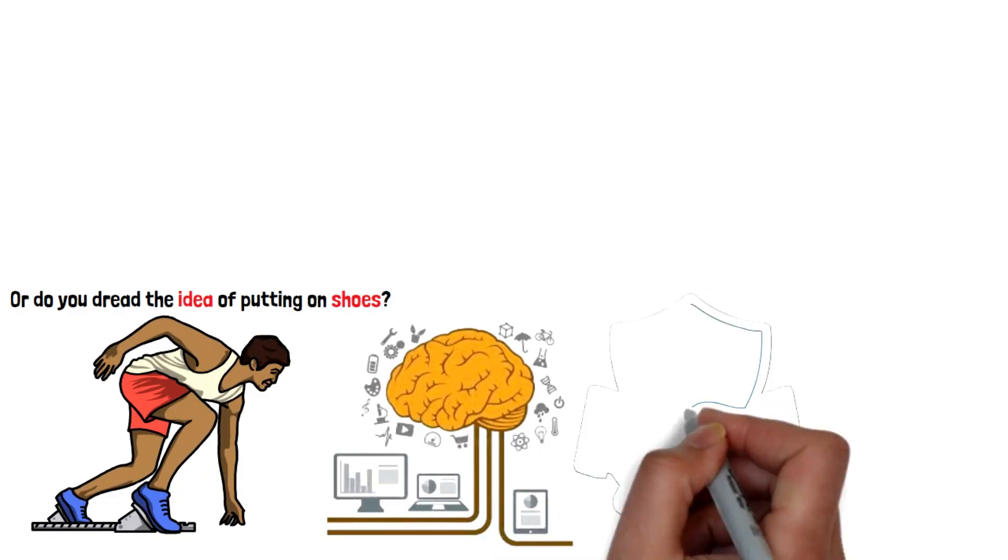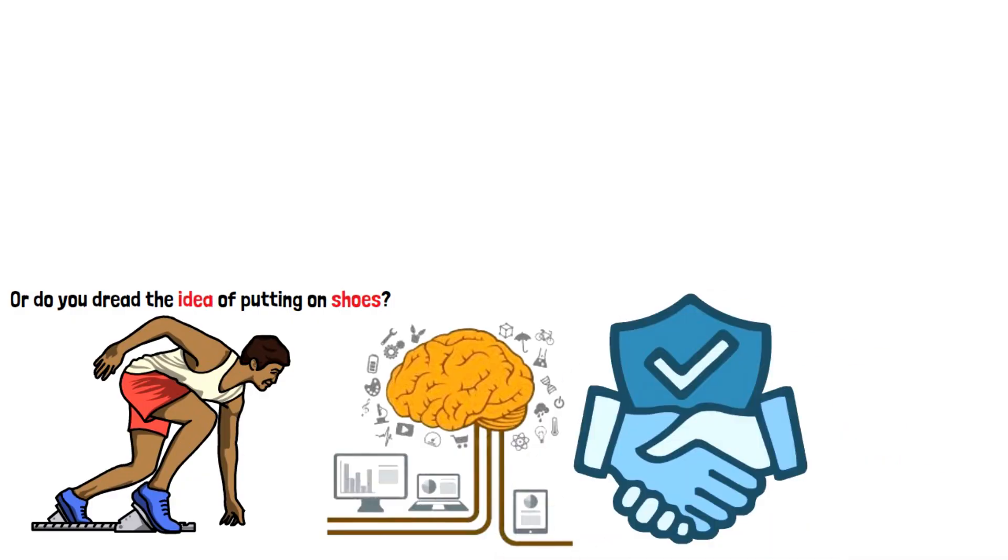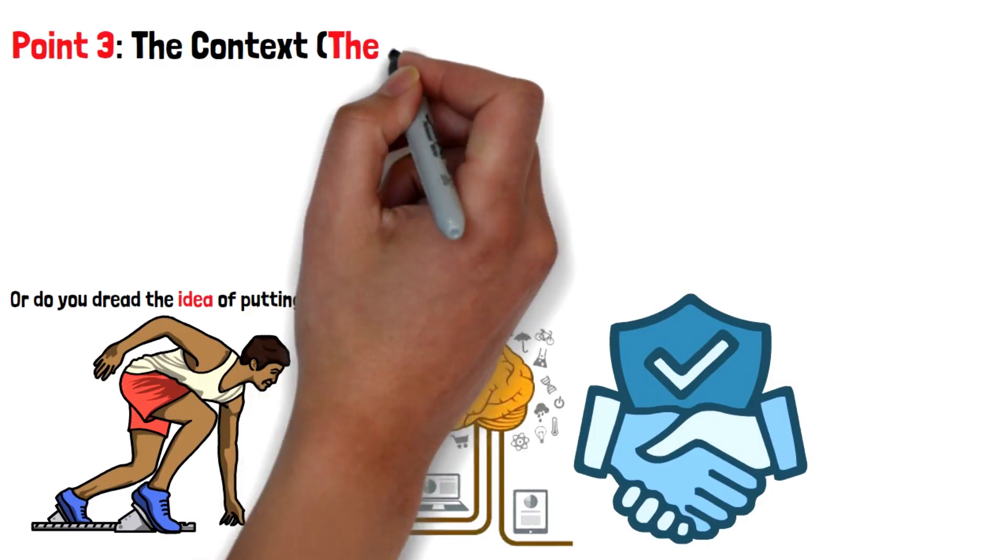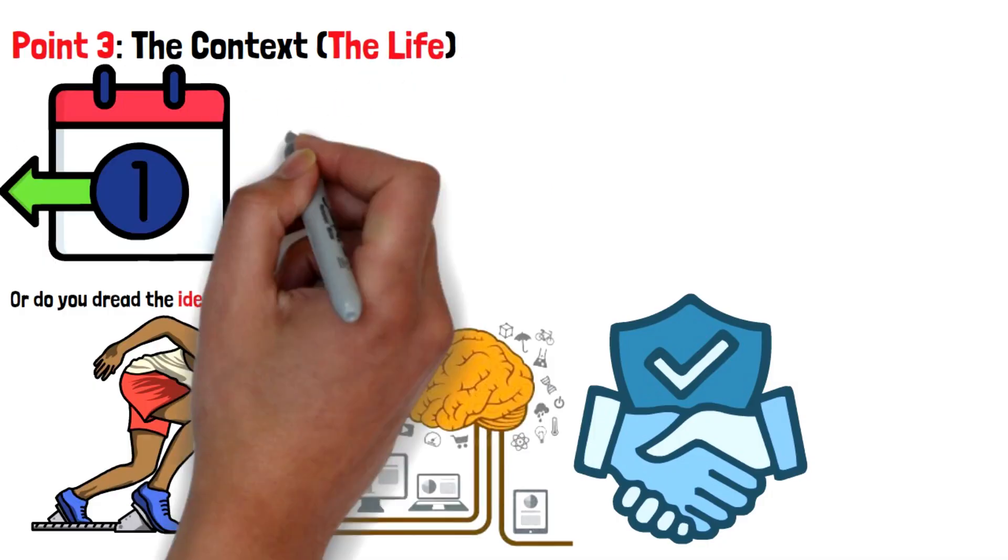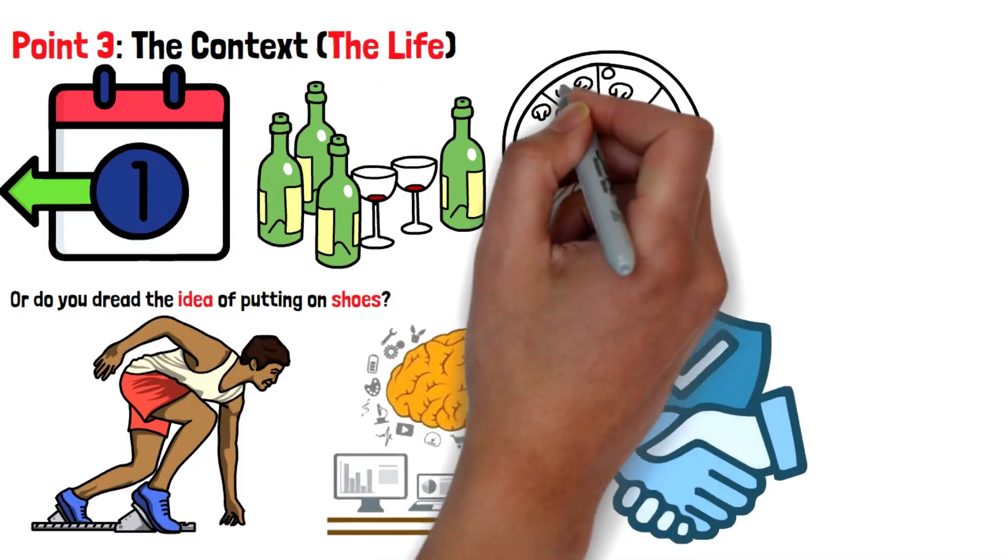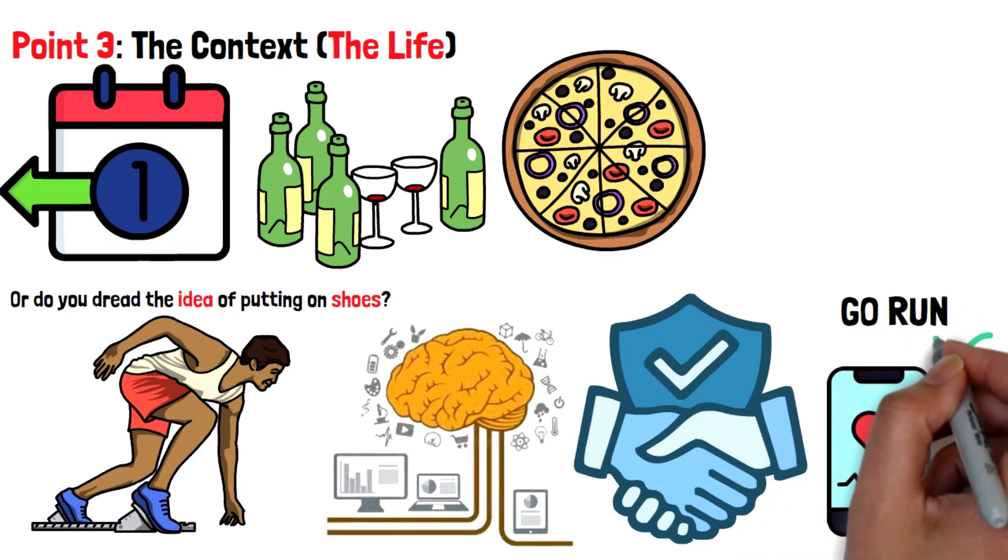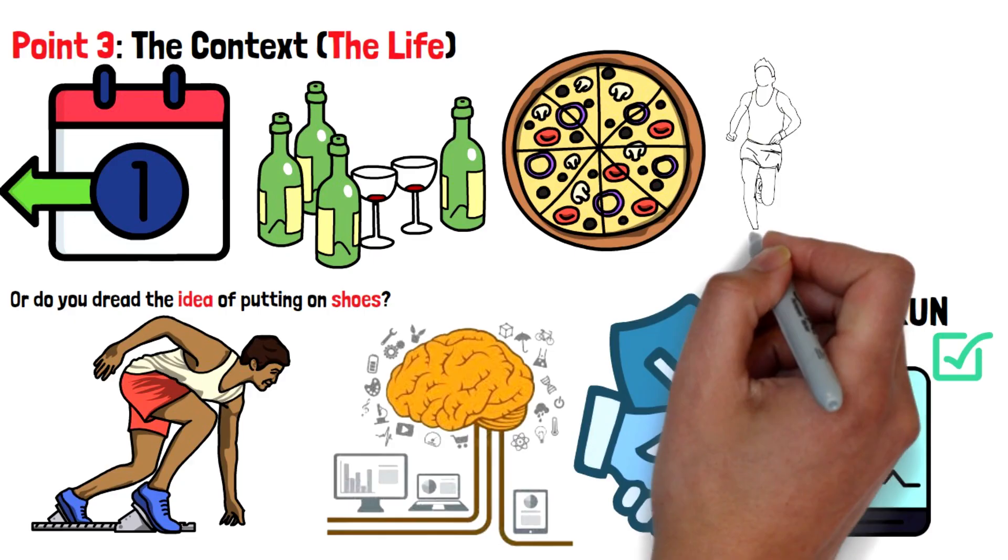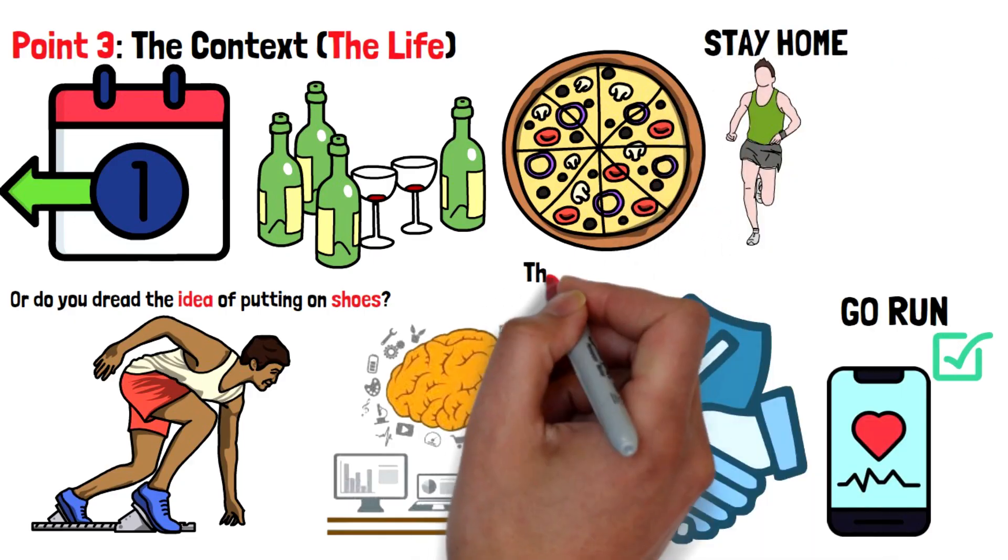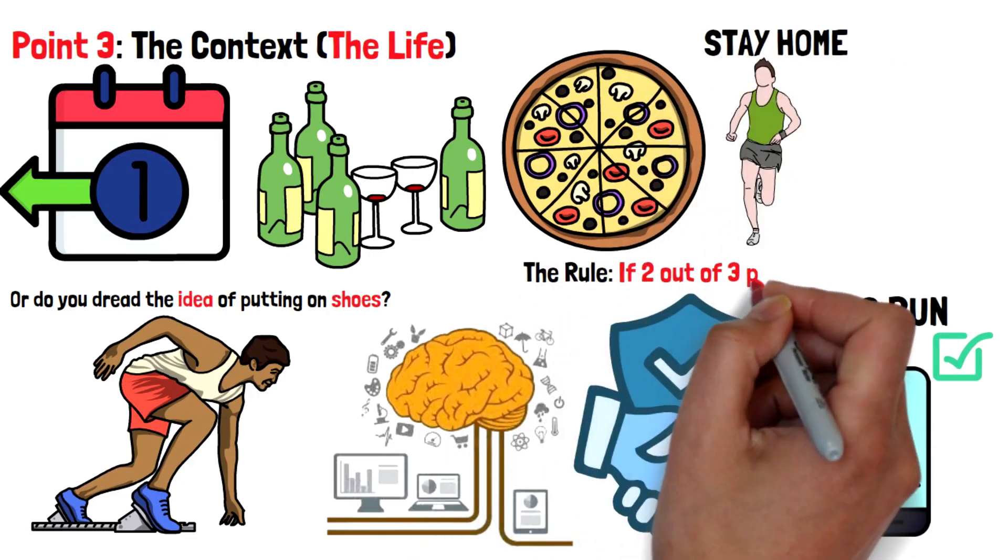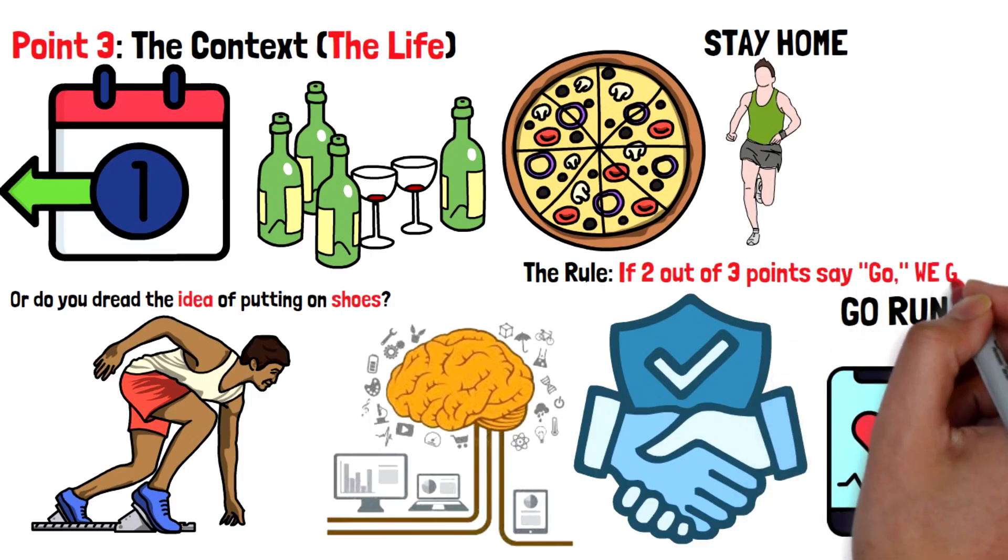Point three, the context: the life. What happened yesterday? Did you drink alcohol? Did you eat pizza? If the HRV is low because of pizza, go run. If the HRV is low because you ran a marathon, stay home. The rule: if two out of three points say go, we go.